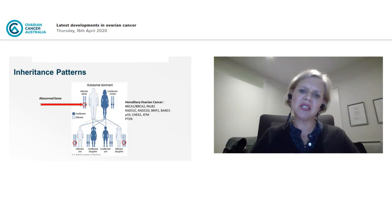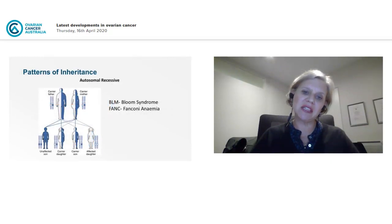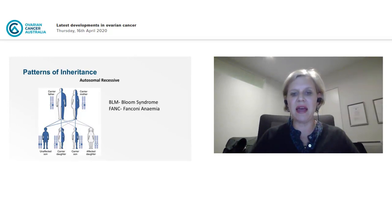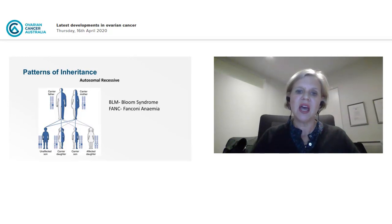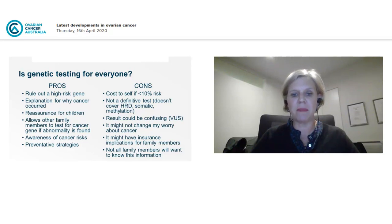Most hereditary ovarian cancer genes follow an autosomal dominant inheritance pattern, meaning only one parent needs to carry the abnormal gene for it to be passed on — with a one in two chance for each child. However, some very rare ovarian cancer genes, such as Bloom syndrome and Fanconi anaemia genes, require both parents to carry the abnormal copy for a child to be affected.